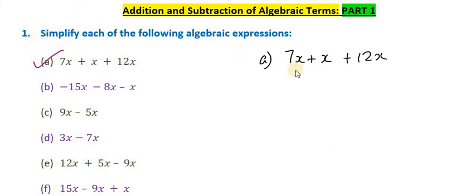Part A, we're adding 7x to x and 12x. So how do we do this? Well, we'll gather the coefficients. The coefficients are the number that multiply to the left of the variable. So we have 7, we have 12. Now in front of this x we're not seeing a number, but literally there is a 1 in front of it. So this plus x is really plus 1x.